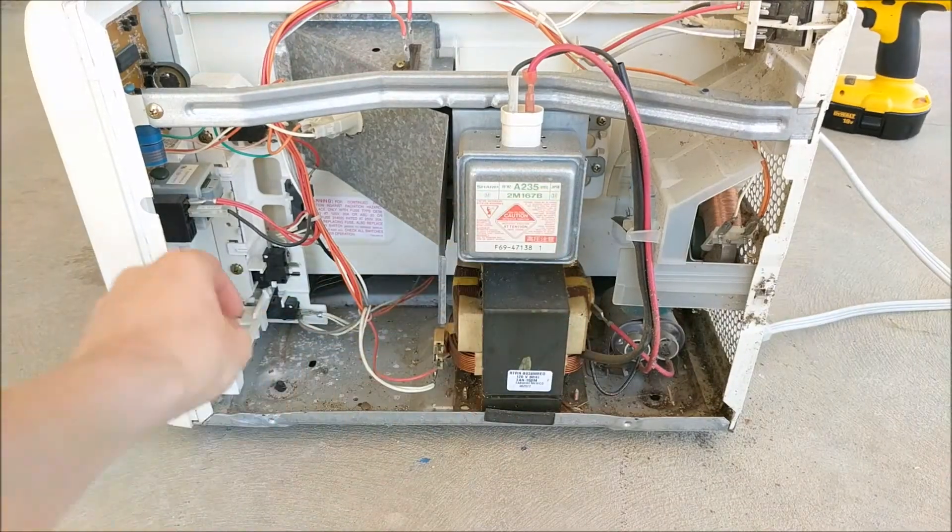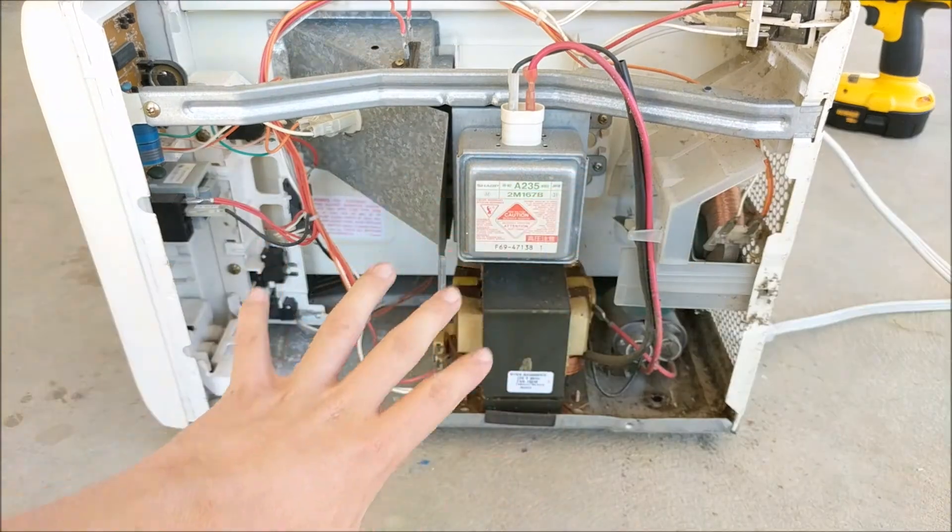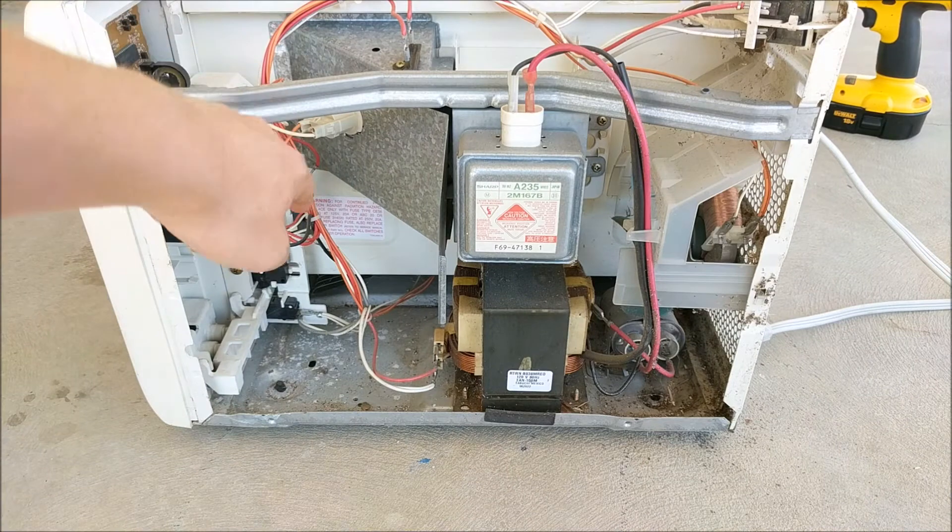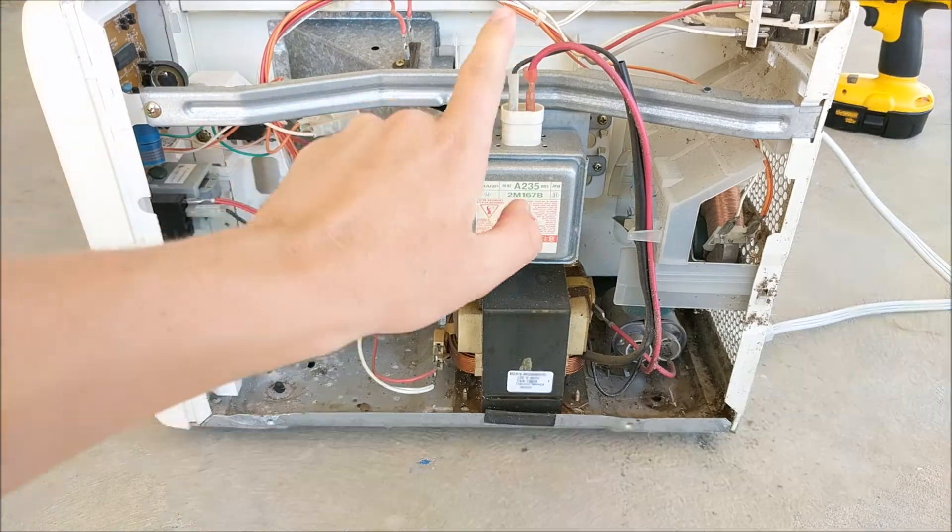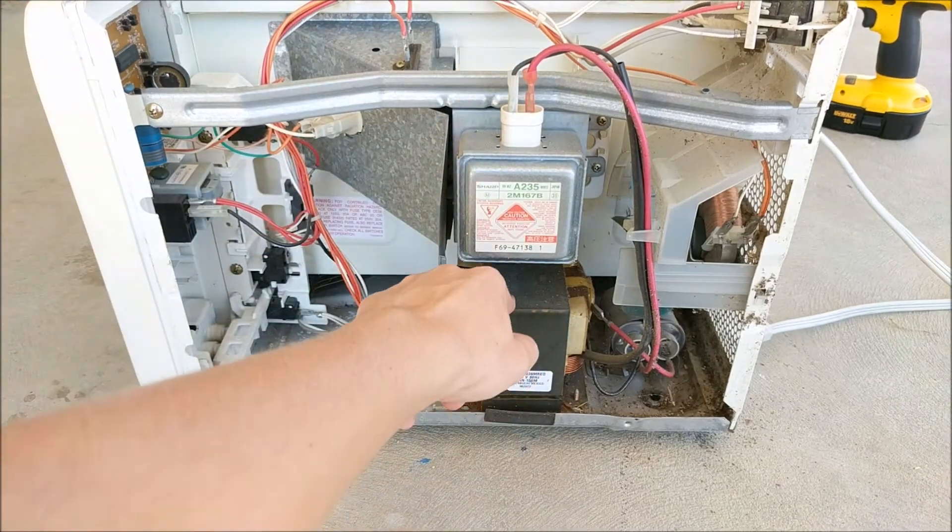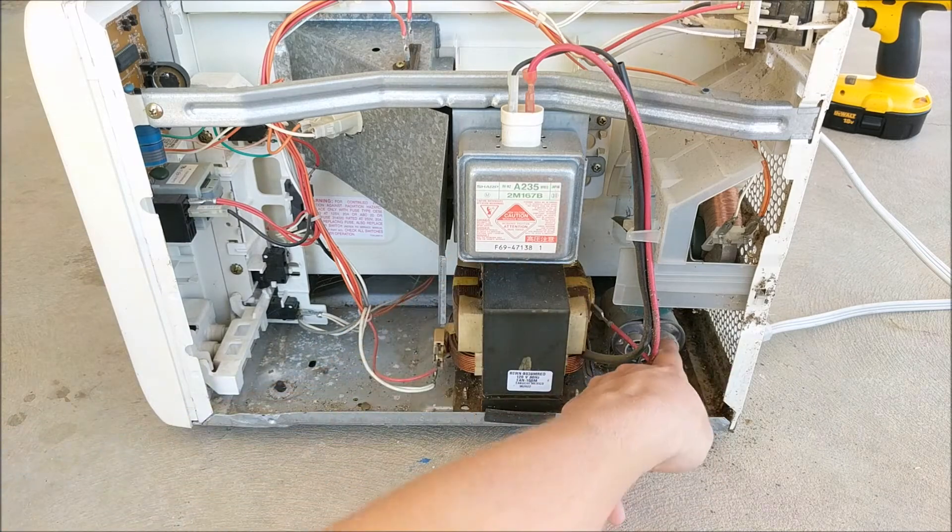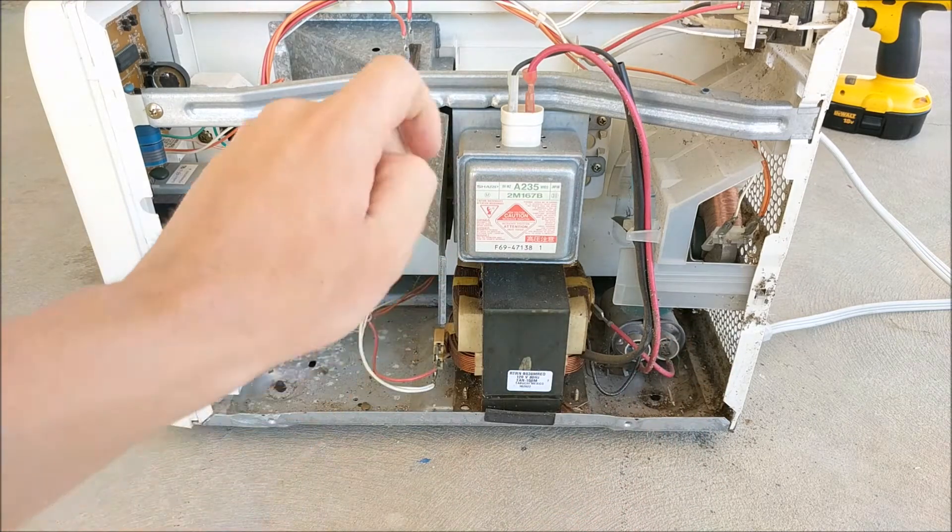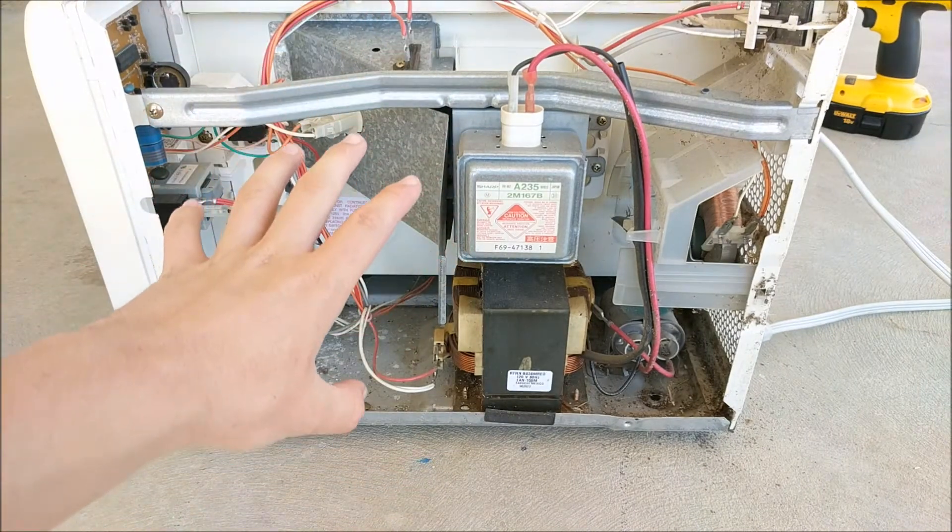Now that we have the microwave open, you can see inside, and you can see that we have five main parts that power this thing. So we have the logic controller board right here, we have the magnetron, we have the microwave oven transformer, we have the capacitor, and then we have a diode. So those main parts are what create all the microwaves.